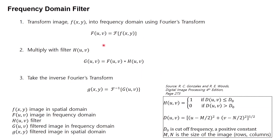Here I will explain briefly step-by-step image filtering in the frequency domain. The first step is to transform our image F into the frequency domain using the Fourier transform. Next, we filter our image in the frequency domain by multiplying it with filter H and we will get the filtered image in the frequency domain. Finally, we take the inverse Fourier transform to get the filtered image in the spatial domain.